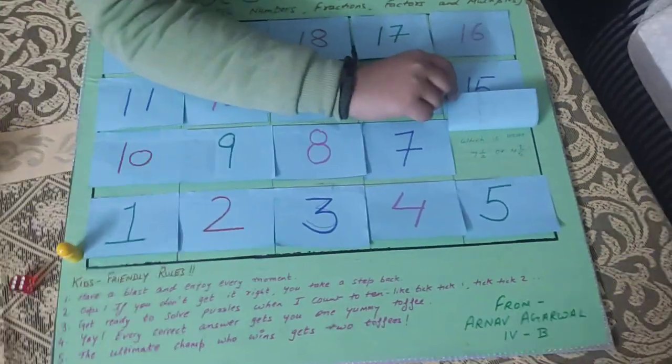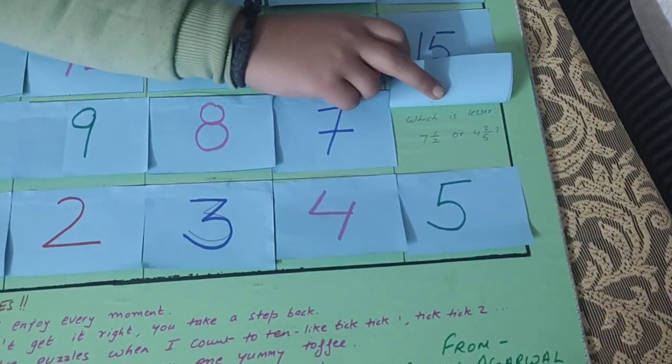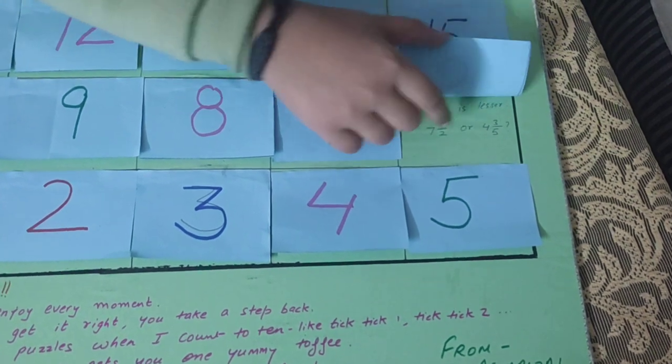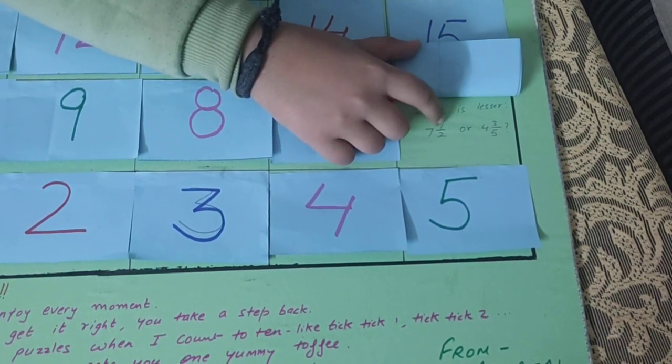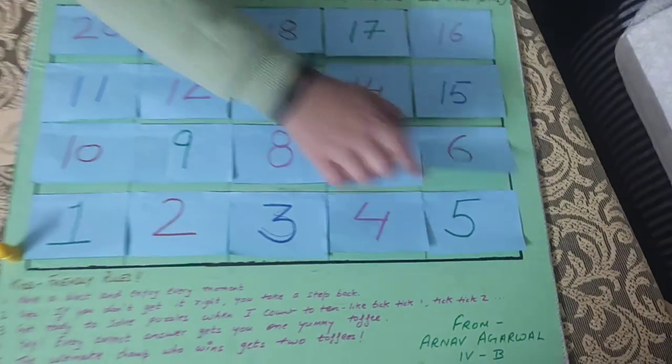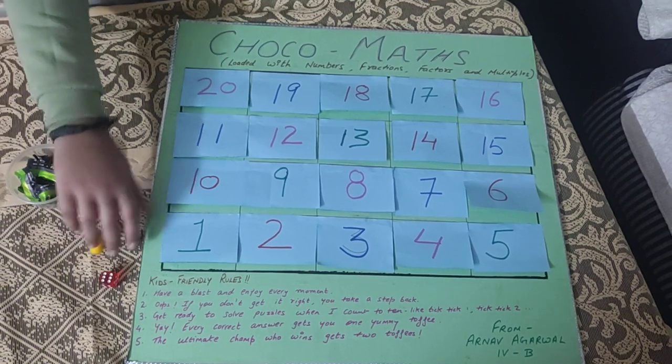And then see what's written here. Which one is lesser? 7 by 2 or 4 3 by 5? 4 3 by 5, obviously. This is a good game.